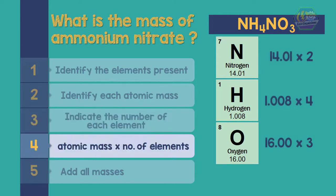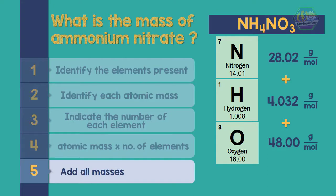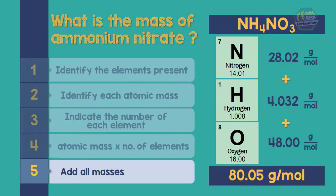The mass of all nitrogen is 28.02 g/mol, all hydrogen is 4.032 g/mol, and all oxygen is 48 g/mol. Therefore, the molecular mass of ammonium nitrate is 80.05 g/mol.